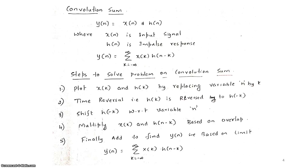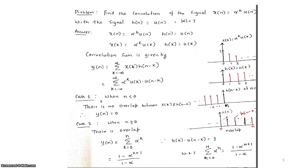These are the steps to solve problems related to the convolution sum. Now we will discuss one problem: find the convolution of the signals x(n) = αⁿ·u(n) and h(n) = u(n), where |α| < 1. We have to find y(n) = x(n) * h(n), so we write the convolution sum equation: y(n) = summation from -∞ to +∞ of x(k)·h(n-k).